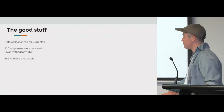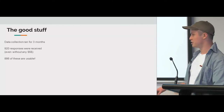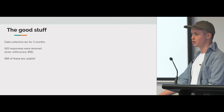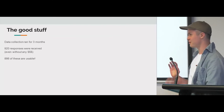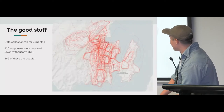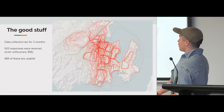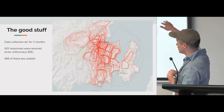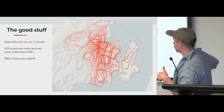My data collection ran for three months. I got 920 responses, even without any money spent. 886 were usable — some were quite bad for reasons you can expect. But these are the actual responses for Wellington. Even then, you can see some quite clear boundaries forming based on the amount of overlap, and some street networks and areas that aren't considered part of neighbourhoods.